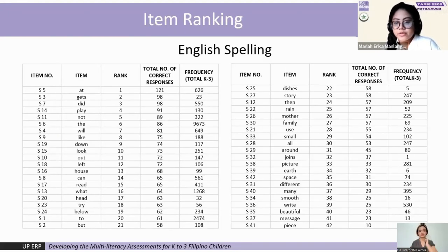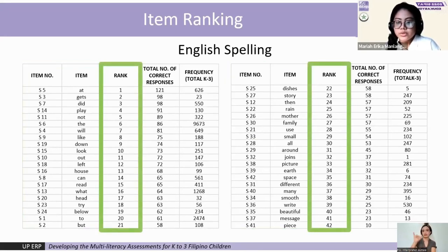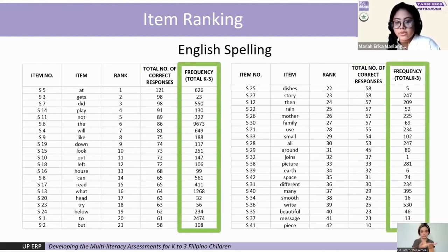We can confirm this in the Tukey's post-hoc test, where kindergarten and grade 1 learners had significantly different mean scores for this item than grades 2 and 3 learners. After repeating this procedure for all test items, we moved on to item ranking. Columns 1 and 2 show the item number and specific item, while column 3 shows the ranking in order of total learners who answered correctly, as seen in column 4. We also utilized Sukatwika to note the total frequencies with which these words appear in learning materials used in schools.